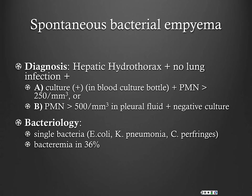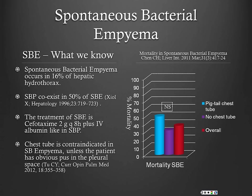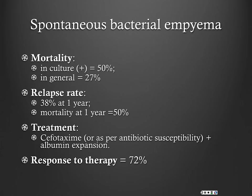Bacteriology is similar to SBP — E. coli, Klebsiella — and up to one-third of these patients actually have bacteremia. SBP and SBE can coexist in about 50% of patients. Importantly, do not put a chest tube in these patients unless they have an actual empyema or frank pus on thoracentesis — placing a chest tube early can actually increase mortality. Treatment is the same as SBP, and response to therapy is usually quite good.